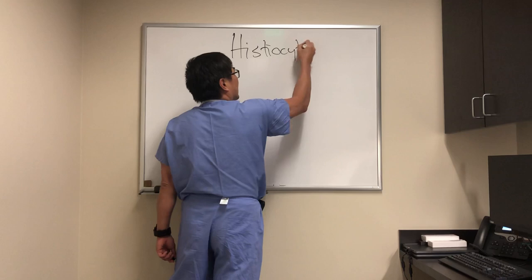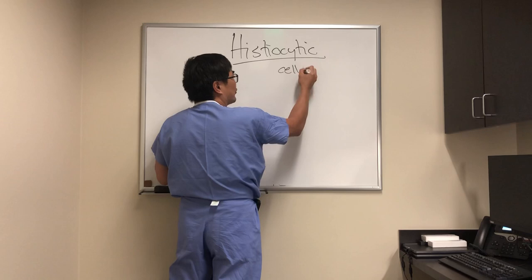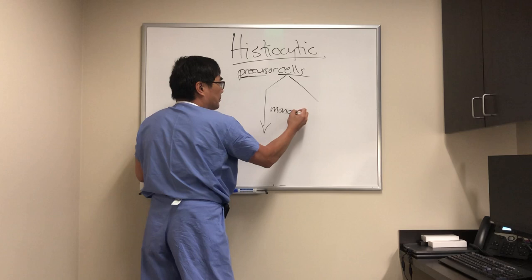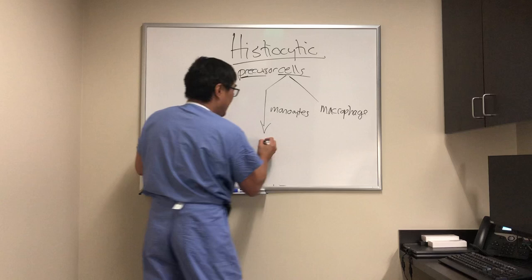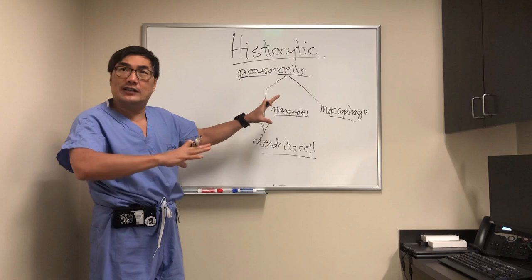Today we're going to be talking about the histiocyte and the histiocytic disorders just in neuroradiology. We're not going to cover the whole hematology of the histiocyte. What you need to know is there are precursor cells that form the basis of the histiocytic lesions we see — either in the monocyte line, the macrophage line, or the dendritic cell. The dendritic cell, monocyte, and macrophage are all part of the immune system, specifically the reticuloendothelial system.